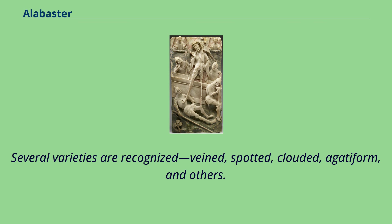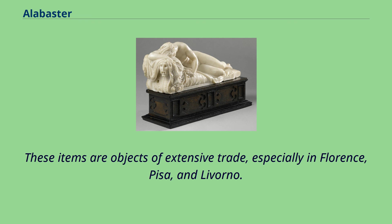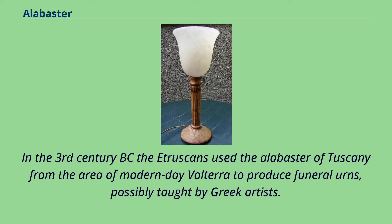Several varieties are recognized: veined, spotted, clouded, agata form, and others. The finest kind, obtained principally from Castellina, is sent to Florence for figure sculpture, while the common kinds are carved locally into vases, lights, and various ornamental objects. These items are objects of extensive trade, especially in Florence, Pisa, and Livorno.